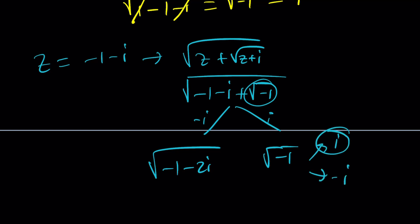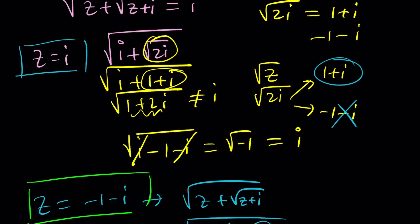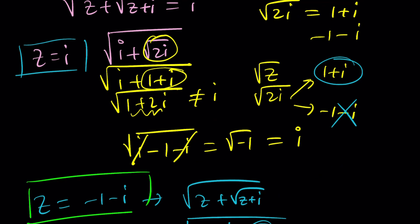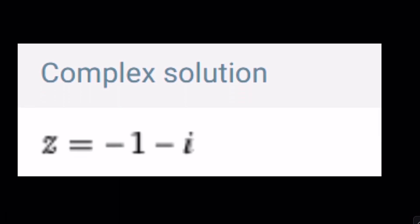But, since we're going with the principal, hopefully i will work. Which means, this is a valid solution. In my opinion, z equals i is also valid, but let's see what WolframAlpha says. Uh-oh. There's only one complex solution, and that is negative 1 minus i. And, this brings us to the end of the video.